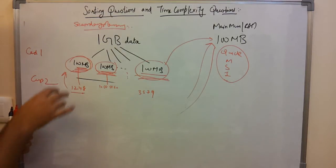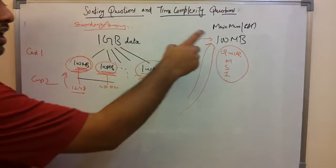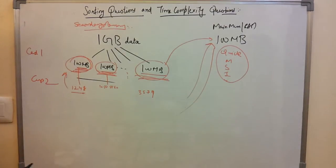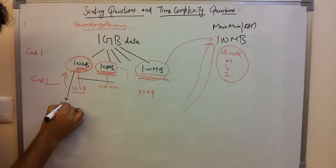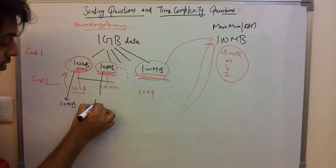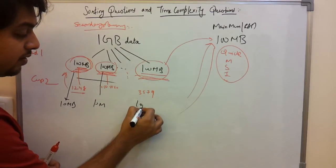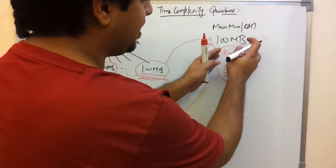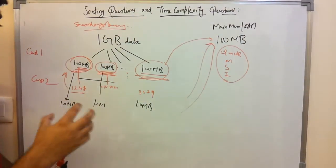You cannot load all chunks into main memory simultaneously because main memory is only 100 MB. So instead, you take 10 MB from each of the 10 groups into main memory at a time.